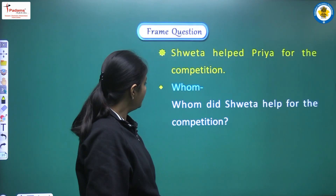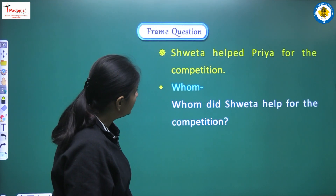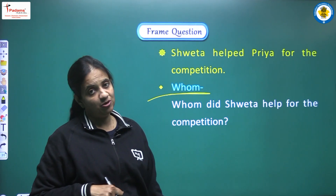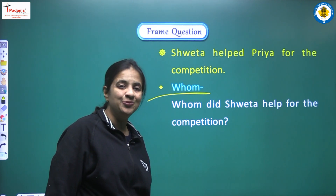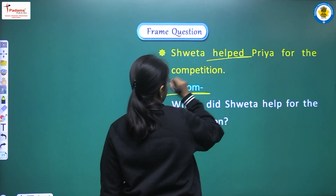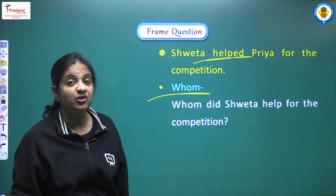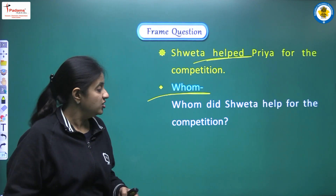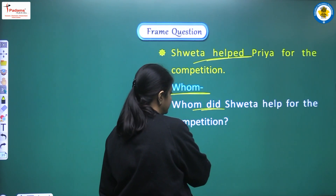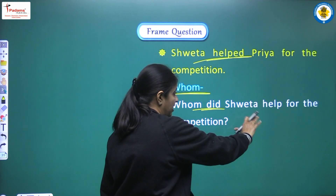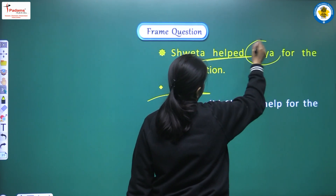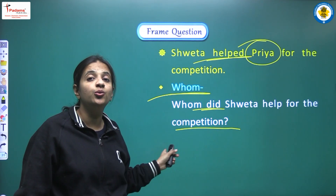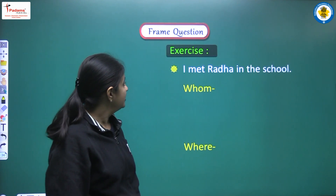Answer: 'Shweta helped Priya for the competition.' The WH word is 'whom.' 'Helped' is past simple tense, so we use 'did.' Question: 'Whom did Shweta help for the competition?' The answer of 'whom' is 'Priya.'